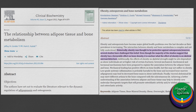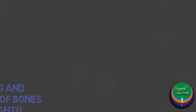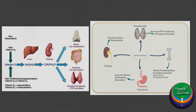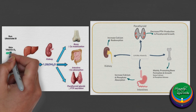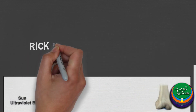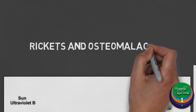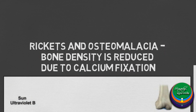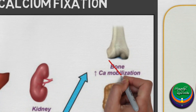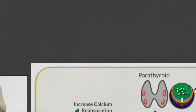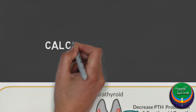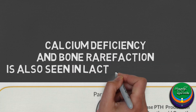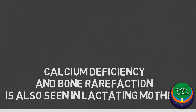Vitamin D is a fat-soluble vitamin generated in the body on exposure to sunlight. Reduced vitamin D is responsible for conditions like rickets and osteomalacia, where bone density is reduced due to calcium fixation. Calcium deficiency and bone rarefaction is also seen in lactating mothers due to the excretion of calcium through breast milk.